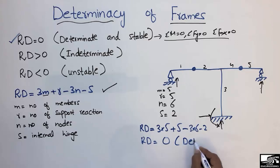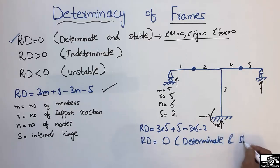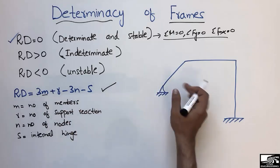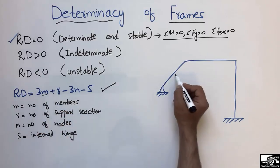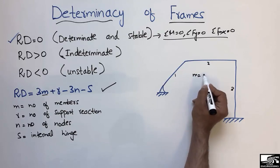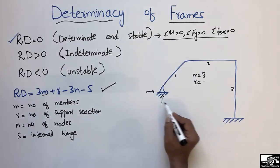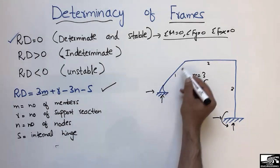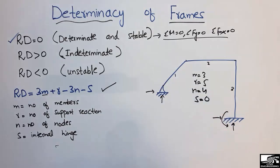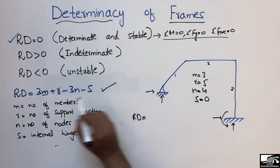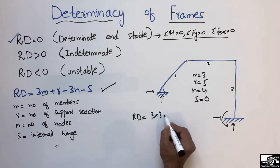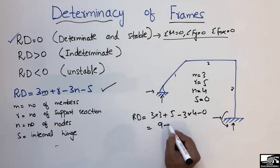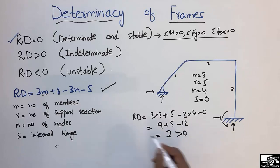Now consider a third example to find its determinancy — whether determinate, indeterminate, or unstable. The number of members: one, two, three — so m equals three. The support reactions: a hinge support gives two reactions and there is a concentrated load support giving three — so r equals five. The number of nodes: one, two, three, four — so n equals four. There is no internal hinge, so s equals zero.